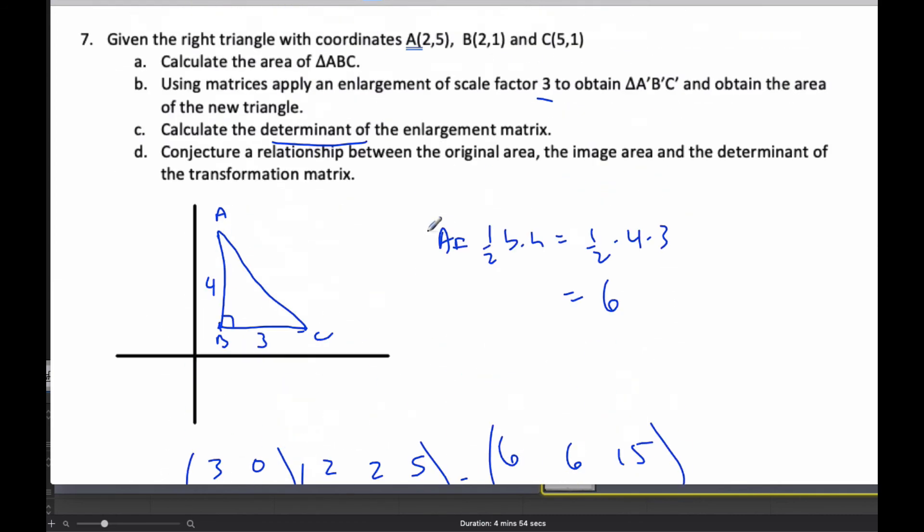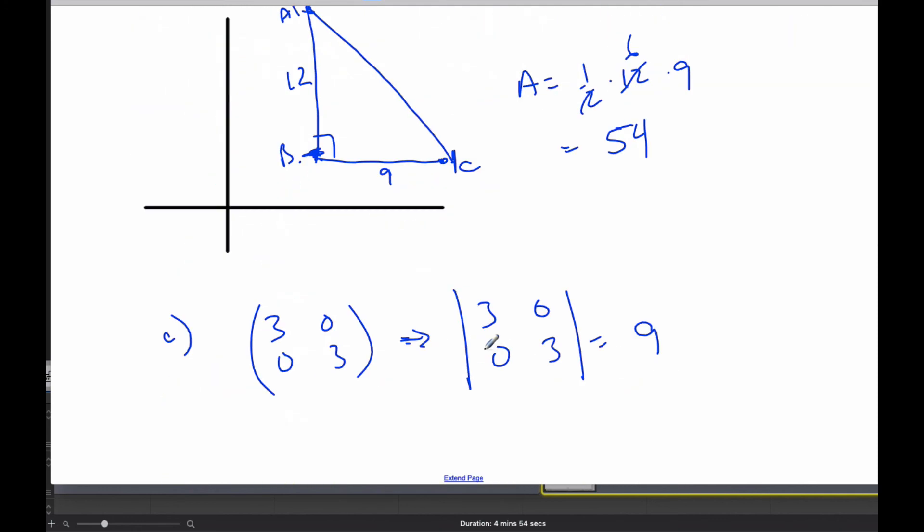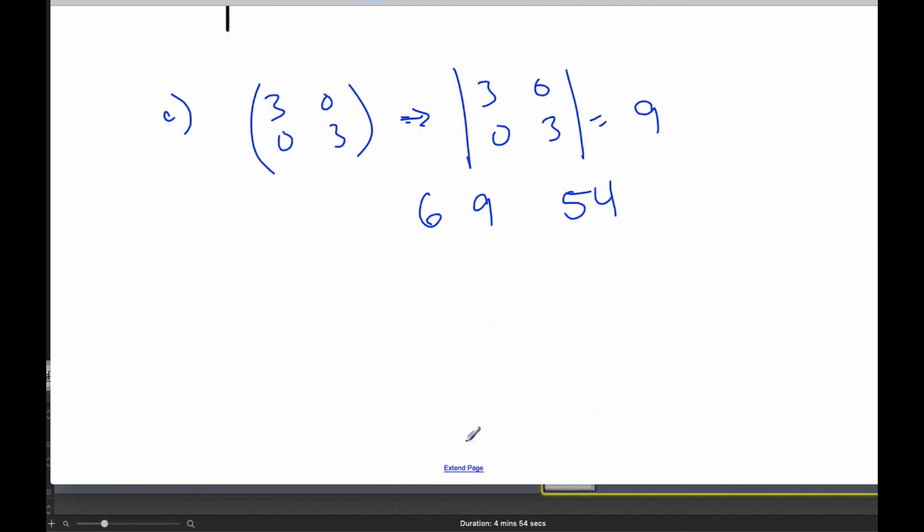Now, D part says conjecture relationship between the original area, the image area, and the determinant. Well, here is the original area, the determinant, and the new area.